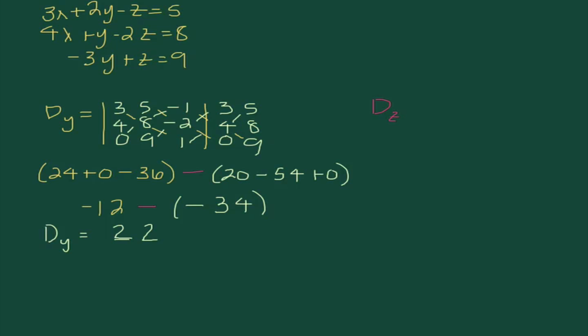Last, but not least, we're going to find D sub Z here. Okay, so, I have 3, 4, 0, 2, 1, negative 3. And, lastly, I'm going to put 5, 8, and 9 in for that column. Okay, 3, 4, 0, 2, 1, negative 3 because I had to rewrite my first two columns.